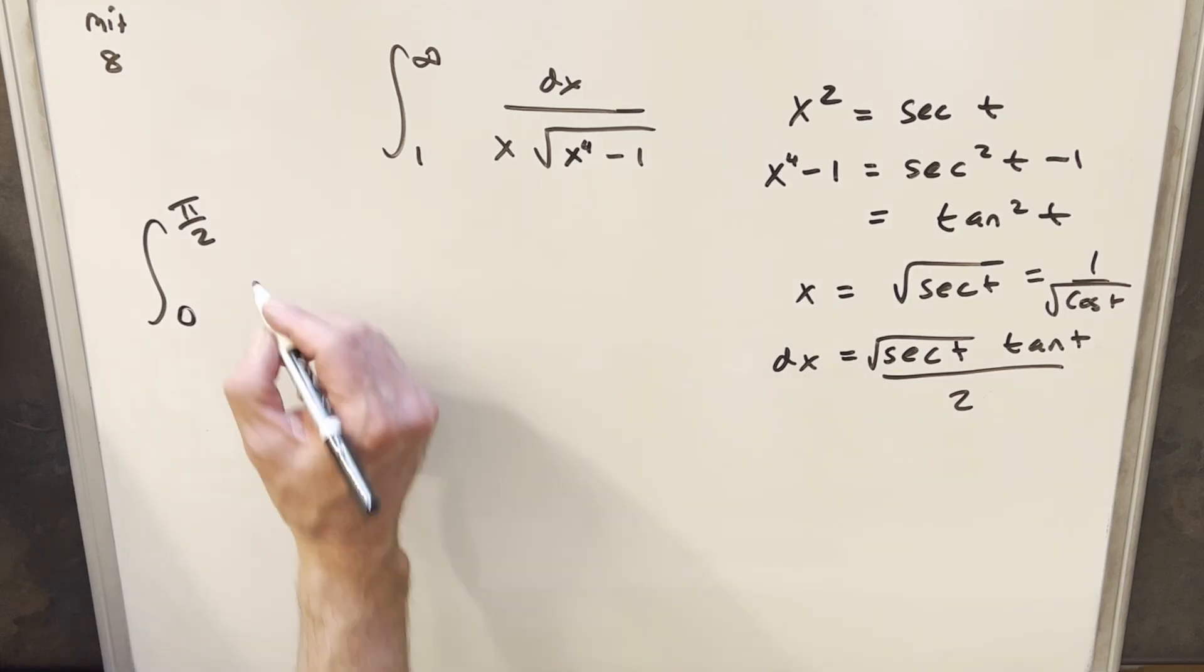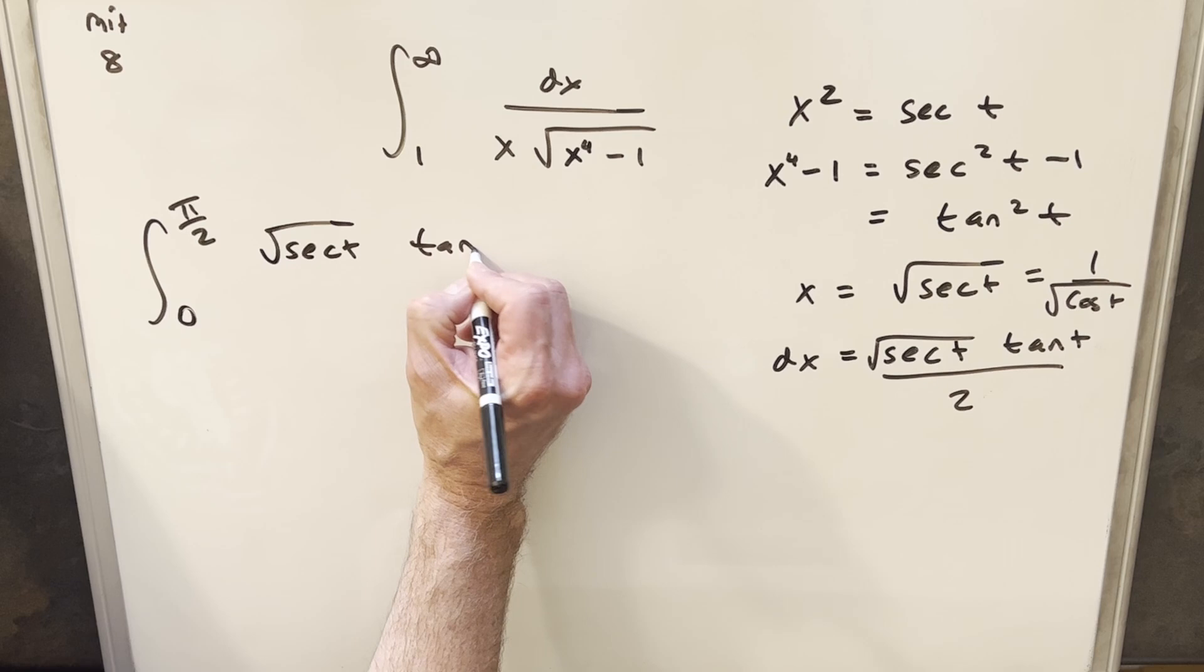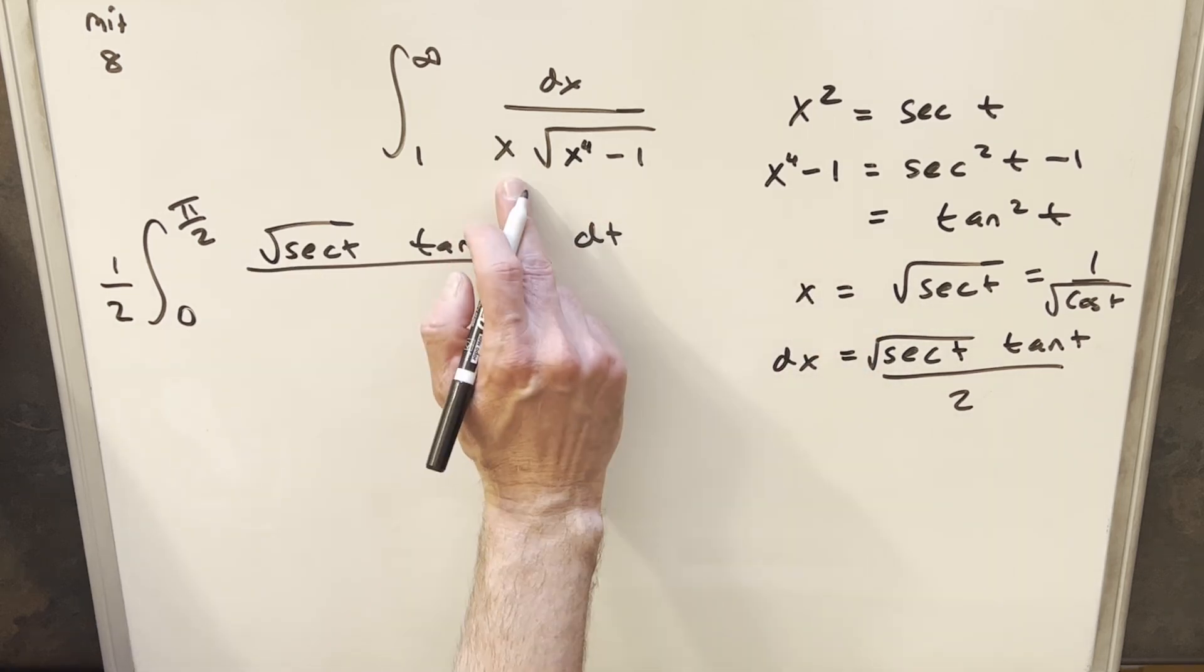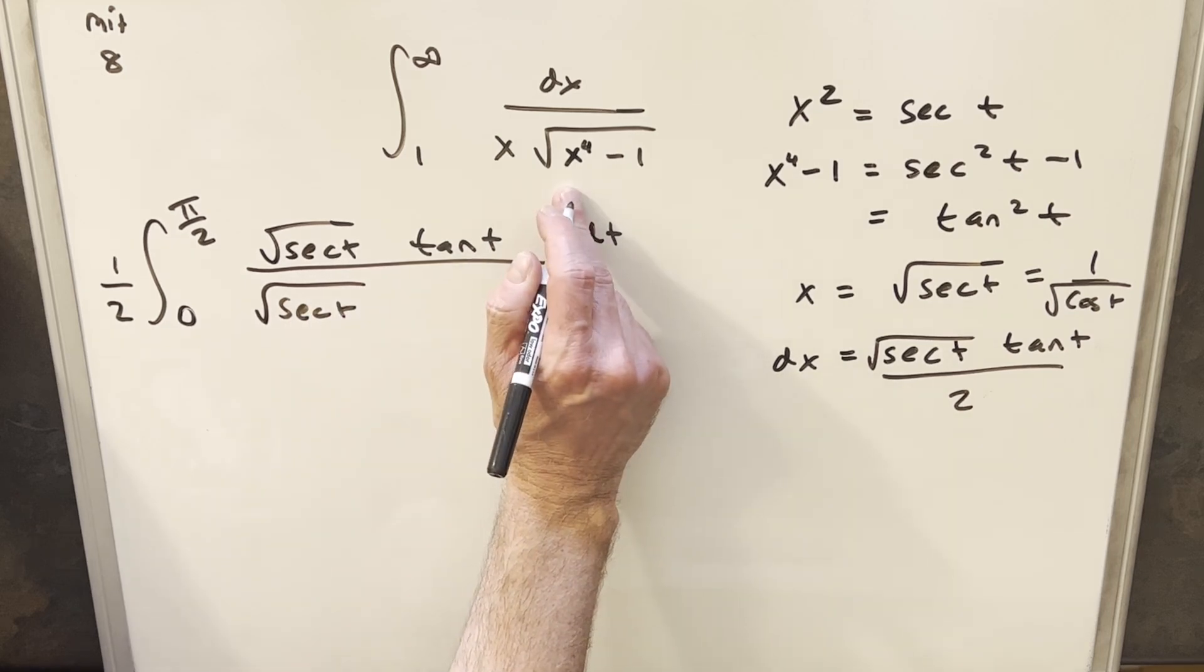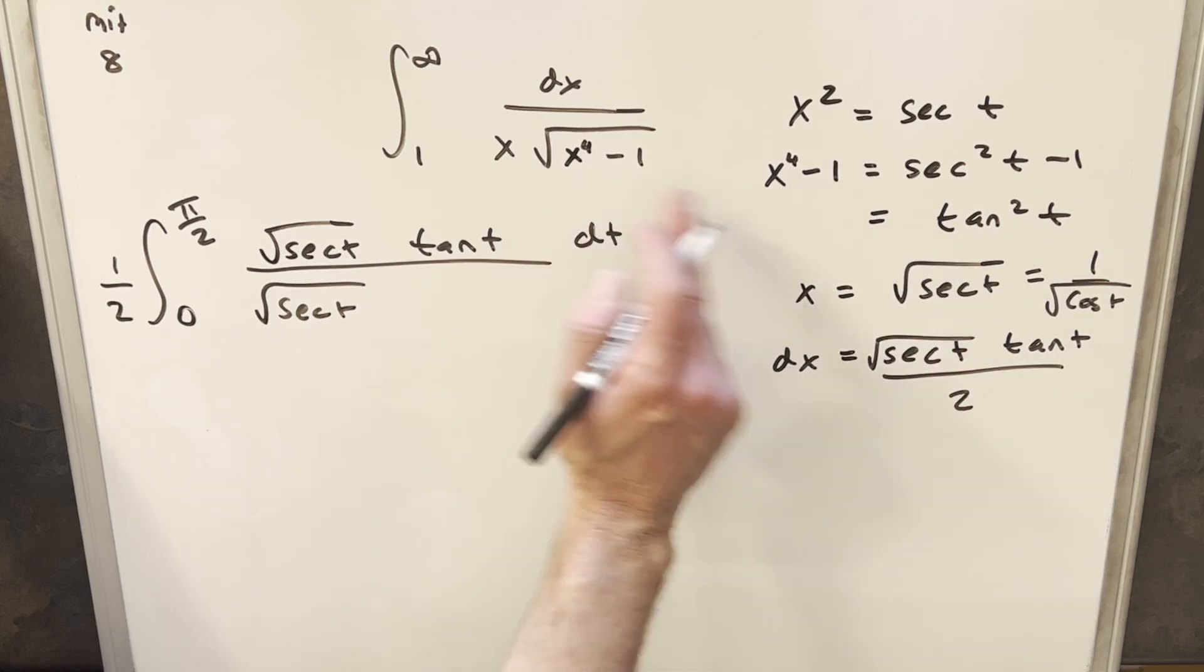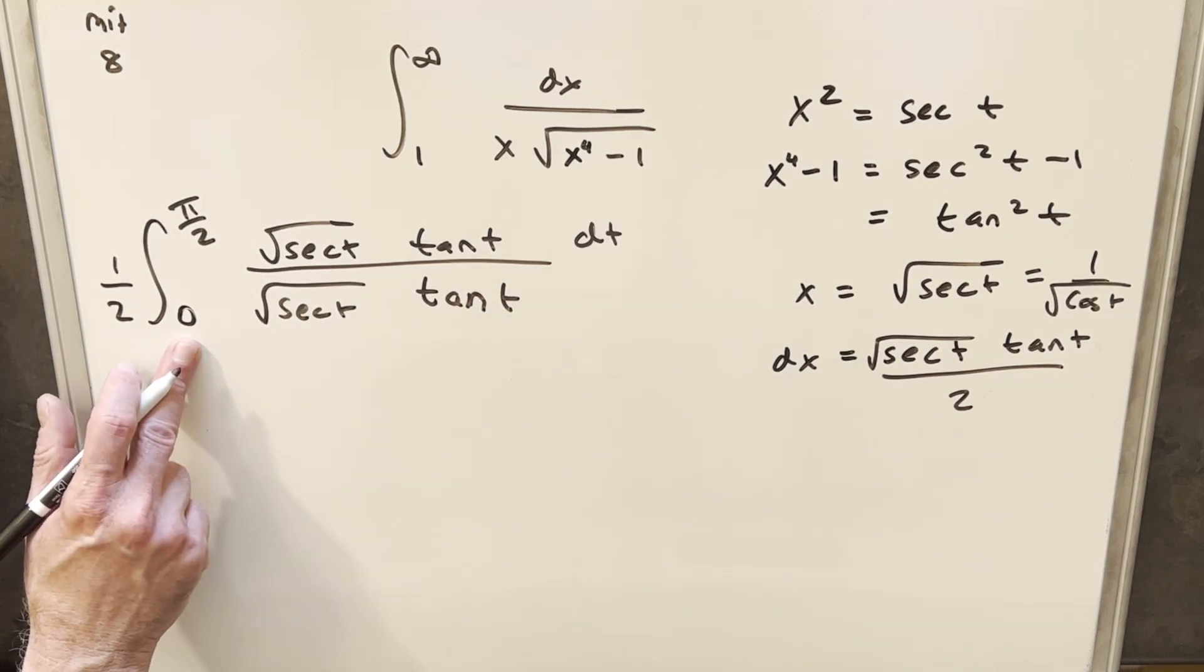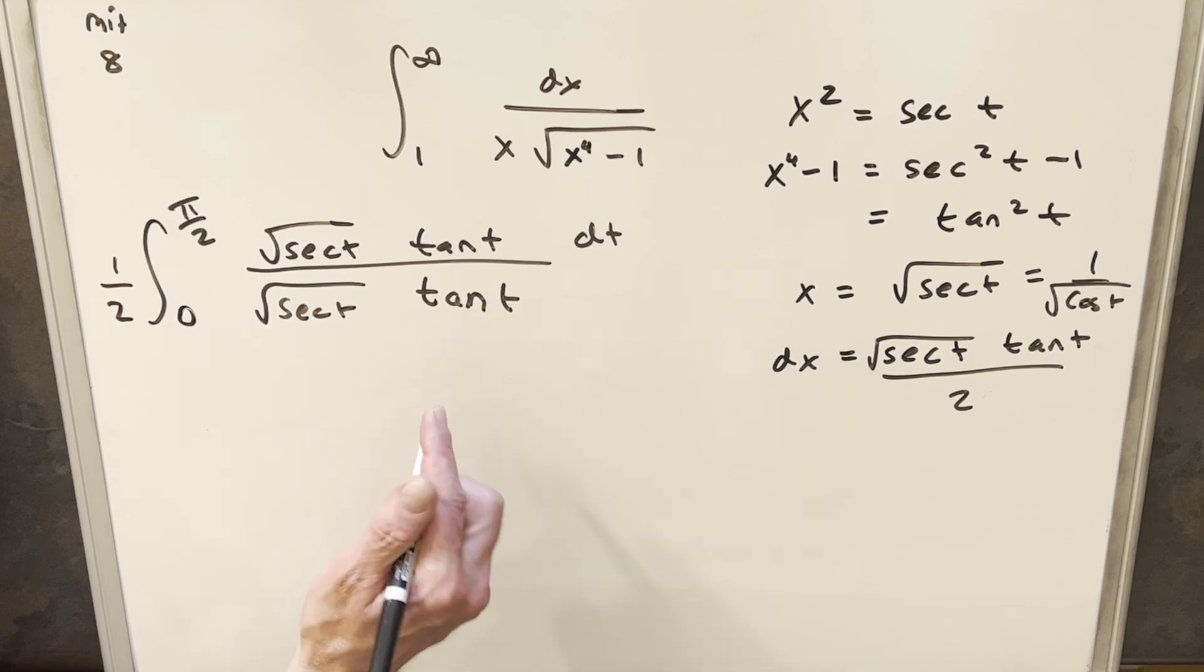Then substituting for dx we have this value over here. So we're going to have square root secant t tan t dt. But I'm going to bring this 1 half out front of the integral. And here our x value is square root of secant t. And this square root x to the fourth minus one, we found x to the fourth minus 1 is tan squared t. Square root of that's just going to be tan t. Technically it would be the absolute value but we'll notice in this region of our bounds this is just the first quadrant. So tangent's always positive there. So we don't need to worry about the absolute value sign.